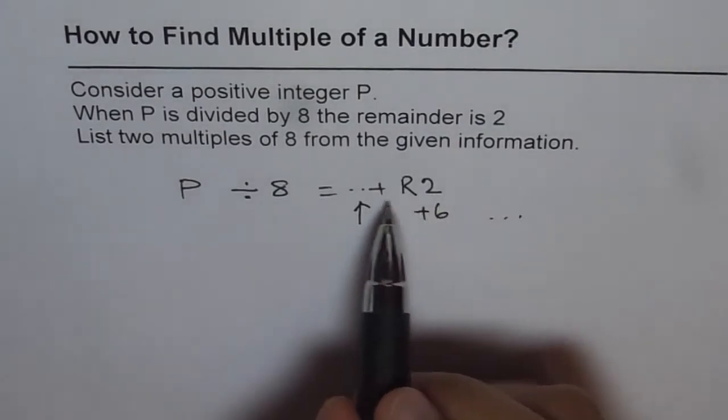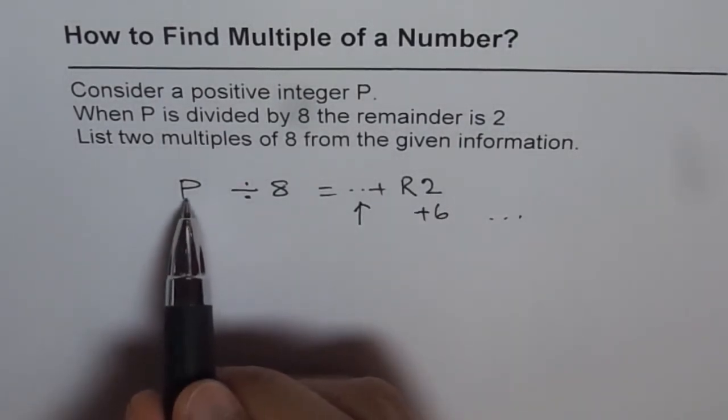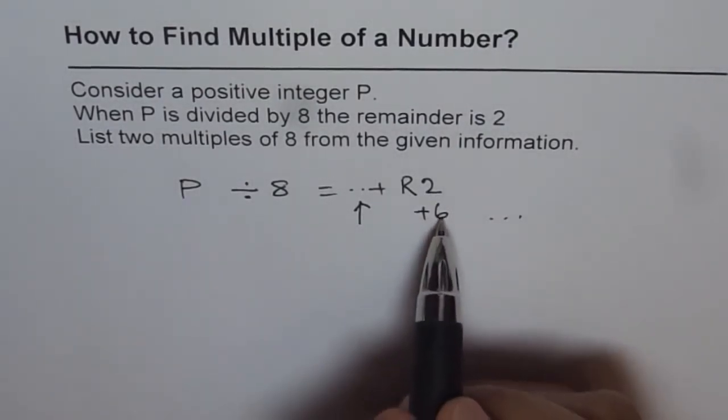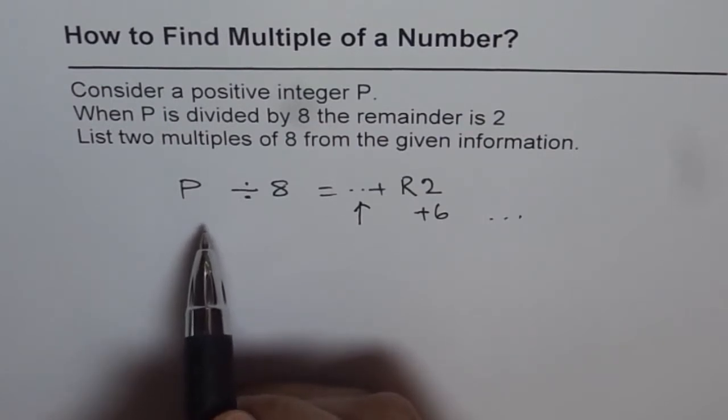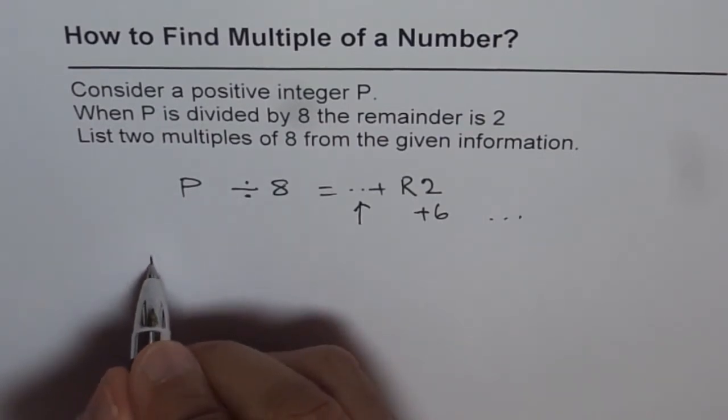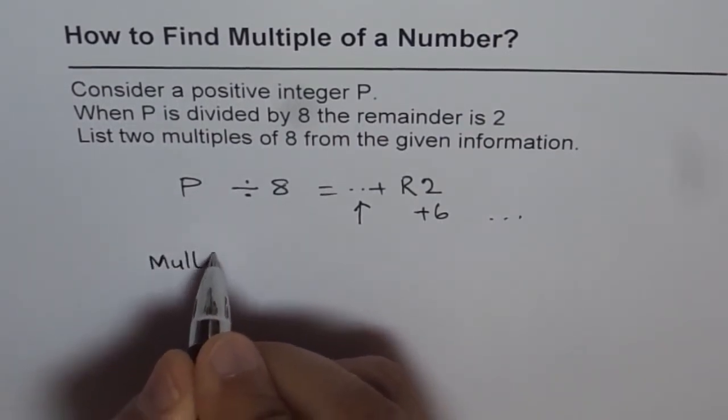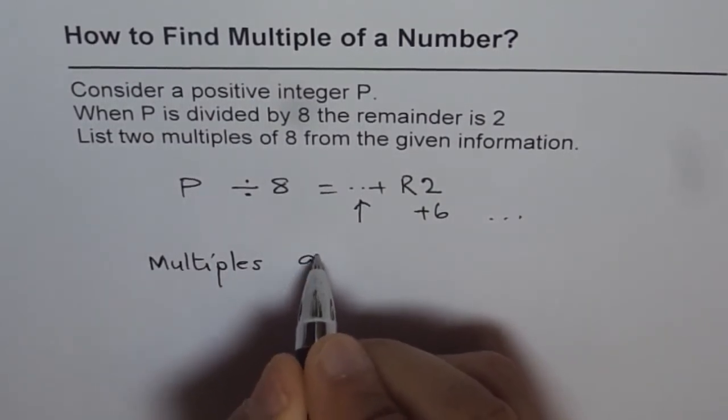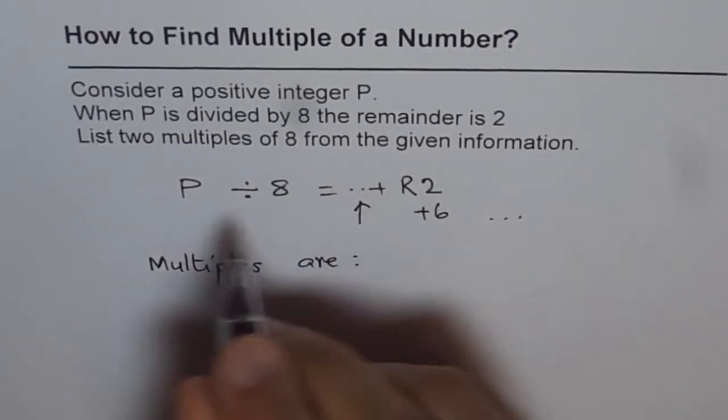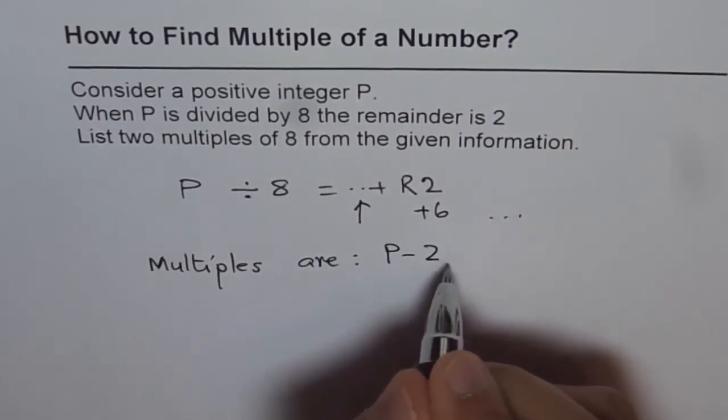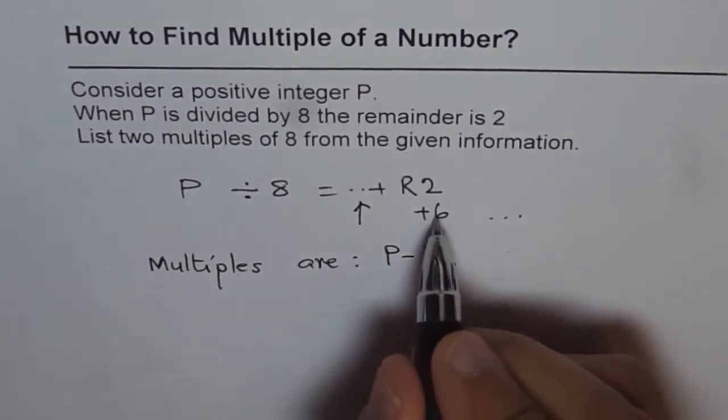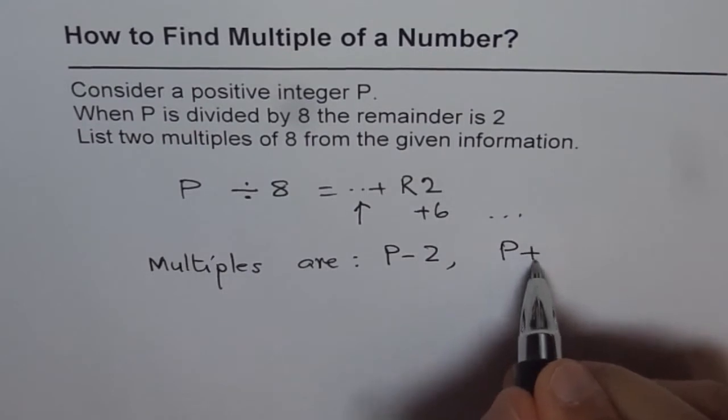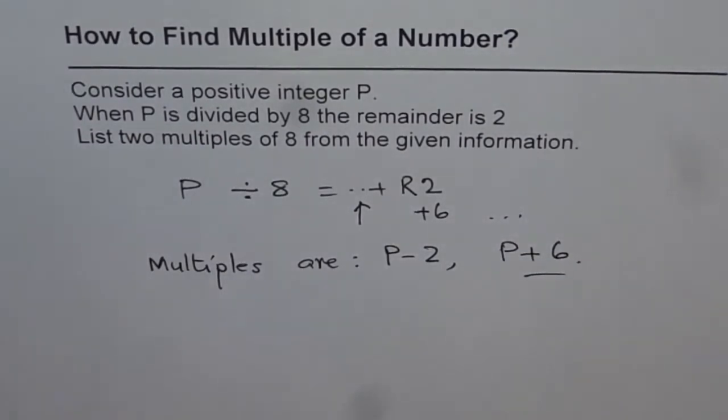So, one number is 2 less than p, and the other number is 6 more than p, right? And therefore, we can say that the multiples are 2 less than p, so p minus 2, or 6 more than p, p plus 6. So these are the two possible answers.